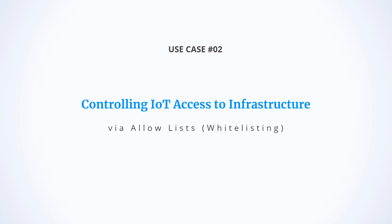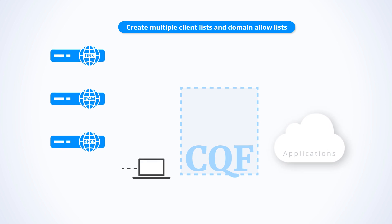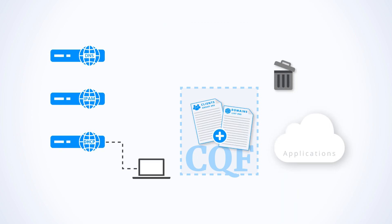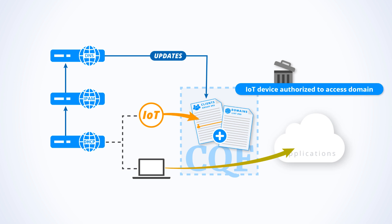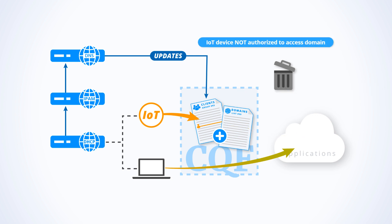In this second use case, we want to restrict IoT devices to only access their applications. We do this by creating multiple client lists and allow lists. Leveraging the full DDI solution, a standard laptop device is authorized by default. When an IoT device is detected by the DHCP service, DDI automation updates the IPAM repository, automatically updating the DNS client list of IoT. Any DNS request from an IoT device is screened — access to an authorized application is allowed, but any other request is denied, thus protecting the application.